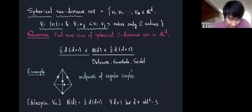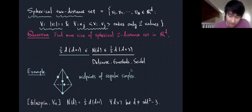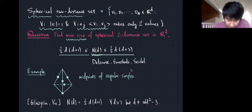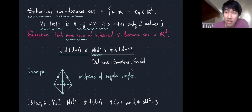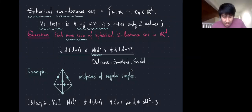A general extremal question: we want to find the maximum size of a spherical two-distance set in R^D. Let's denote this maximum size by N(D). We have two inequalities bounding this function. They are quite close — if you only want order of magnitude, they are about half of D squared. The upper bound, due to Delsarte, Goethals, and Seidel, says it's bounded by (1/2)D(D+3).